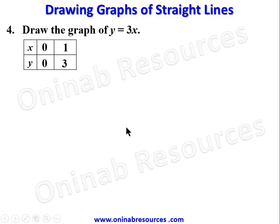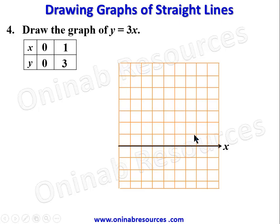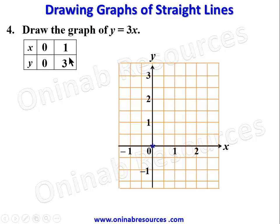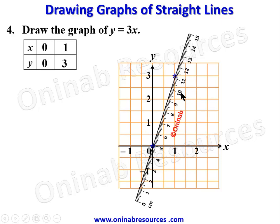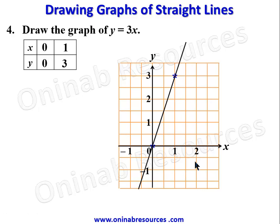We have our graph with the X axis and Y axis. This is the origin; to the right are 1 and 2, above are 1, 2, and 3, and to the left is negative 1 and below negative 1. The line passes through the origin, so we mark that point. When X is 1, Y is 3 — we mark that out. We carefully place the ruler and join the two points. This is the line of y equals 3x.